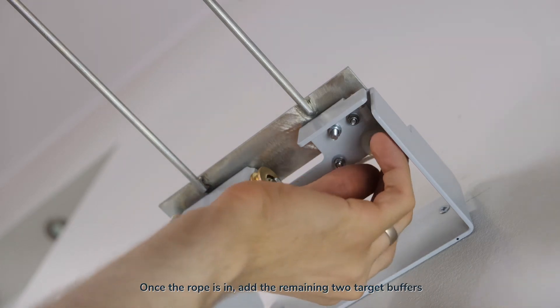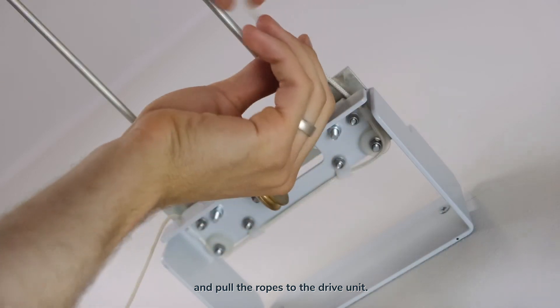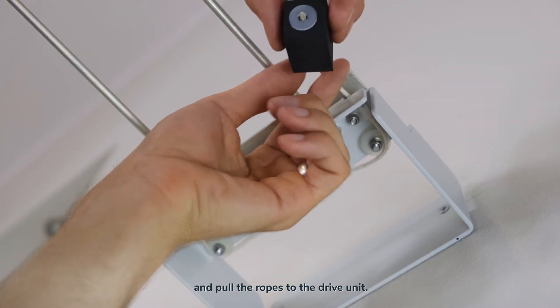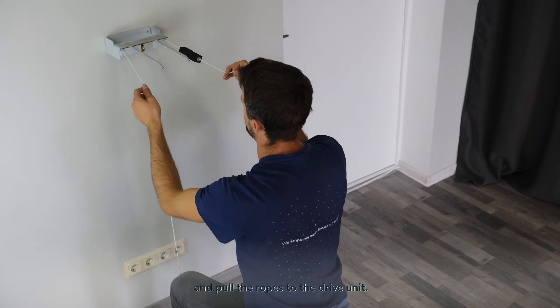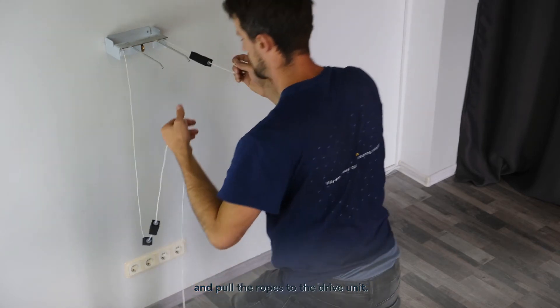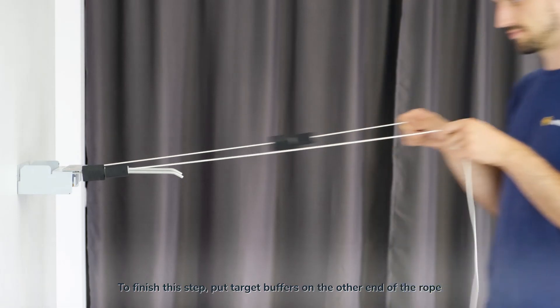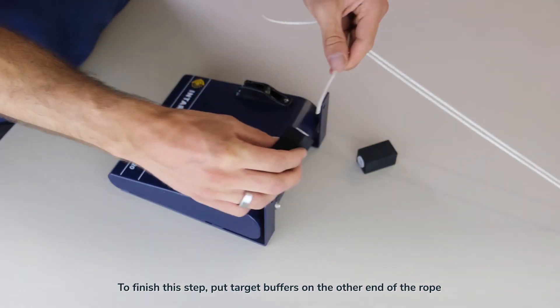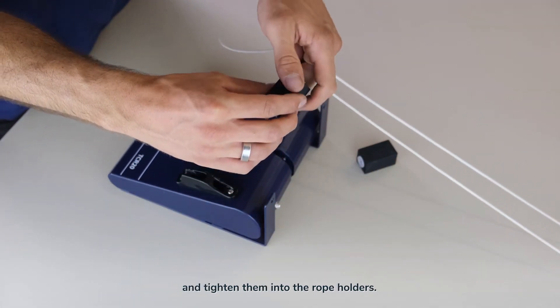To finish this step, put target buffers on the other end of the rope and tighten them into the rope holders.